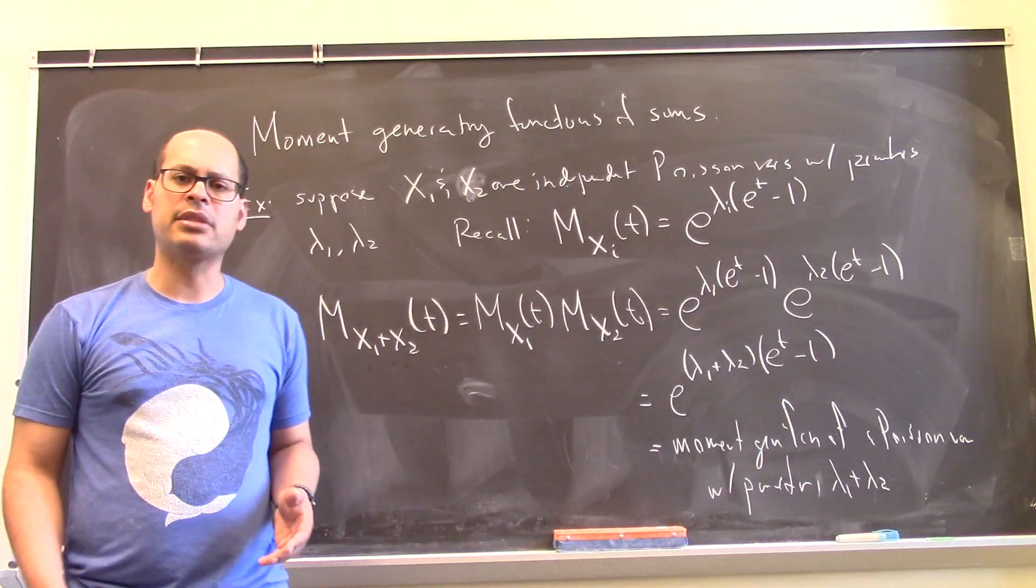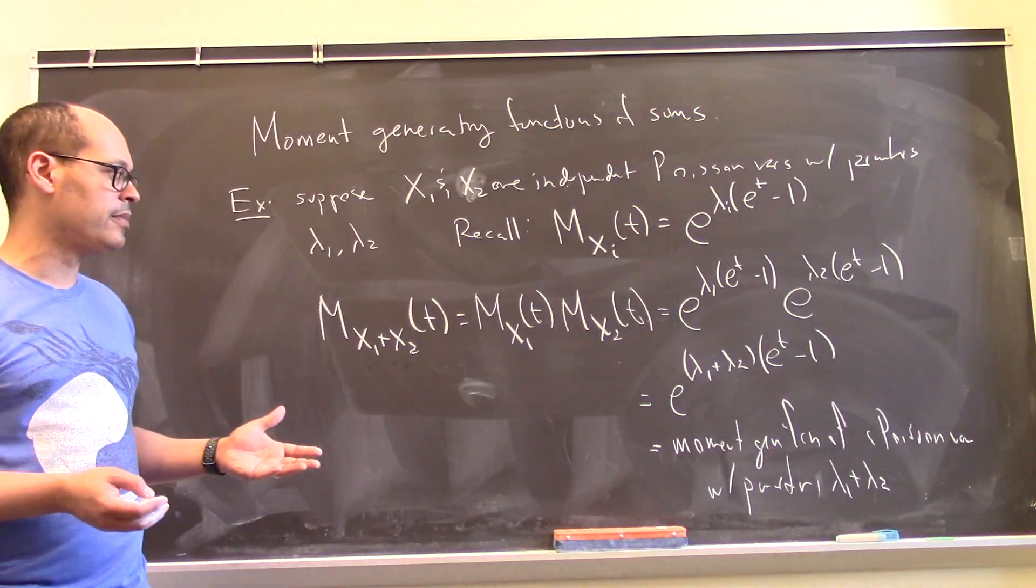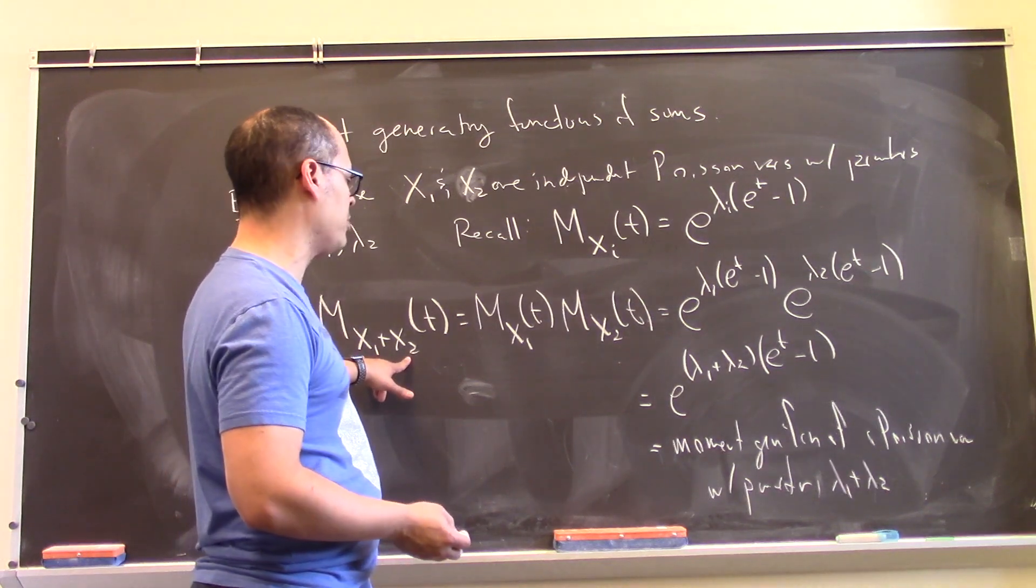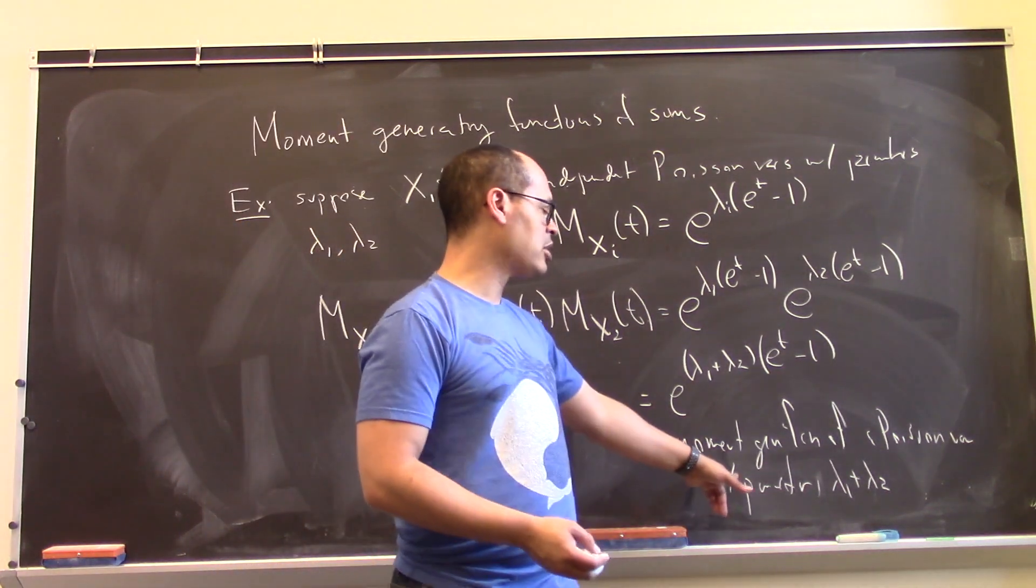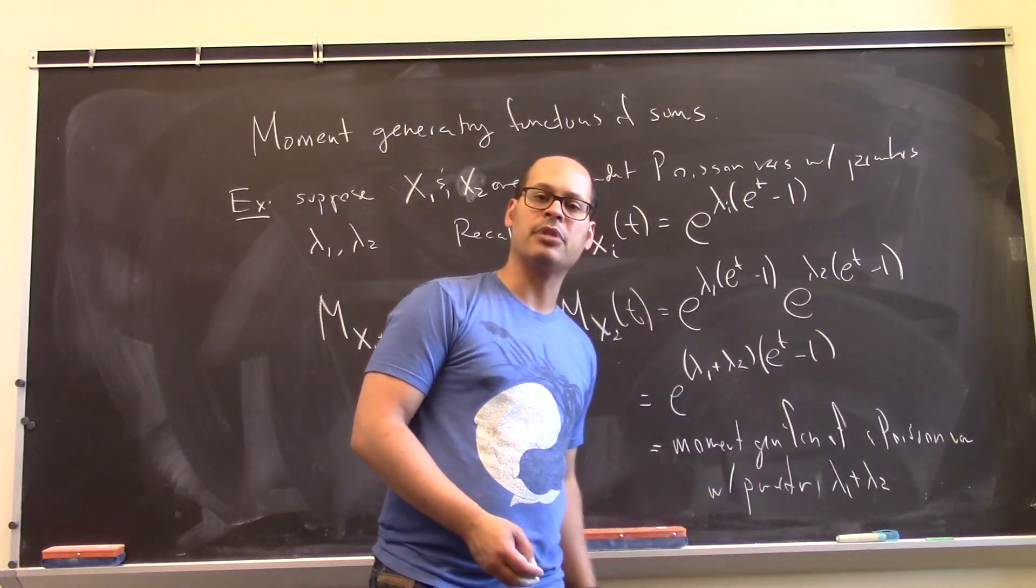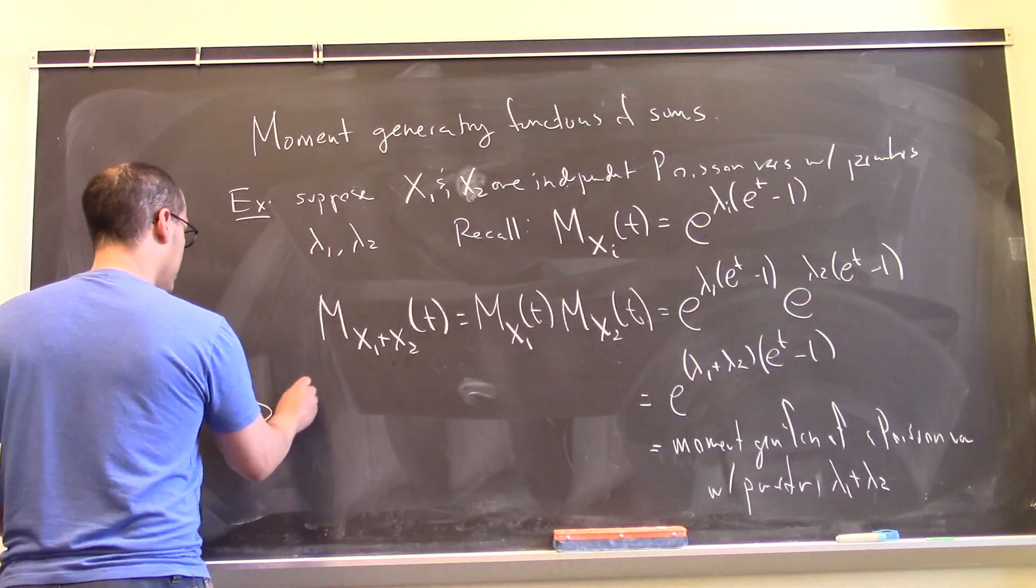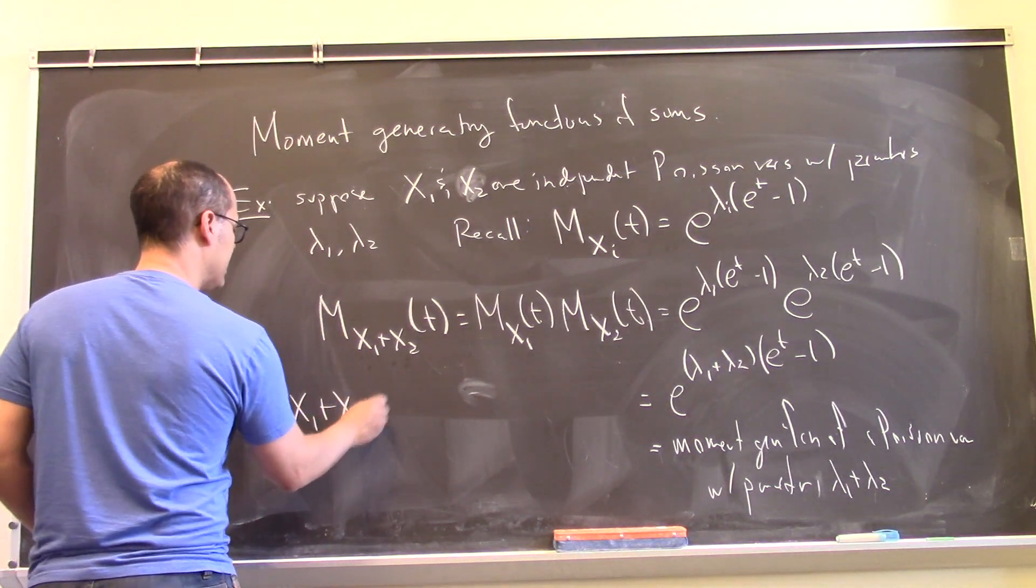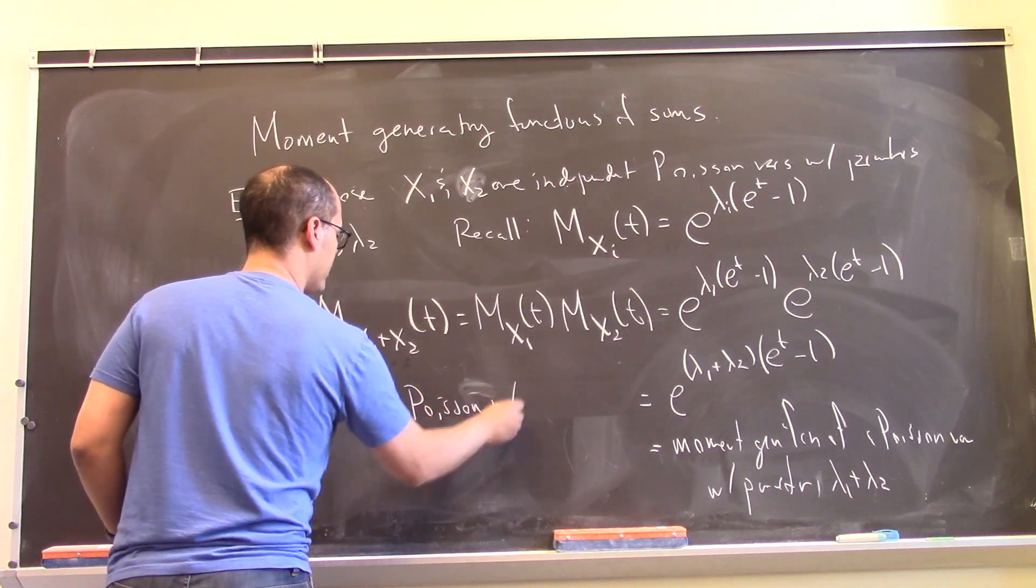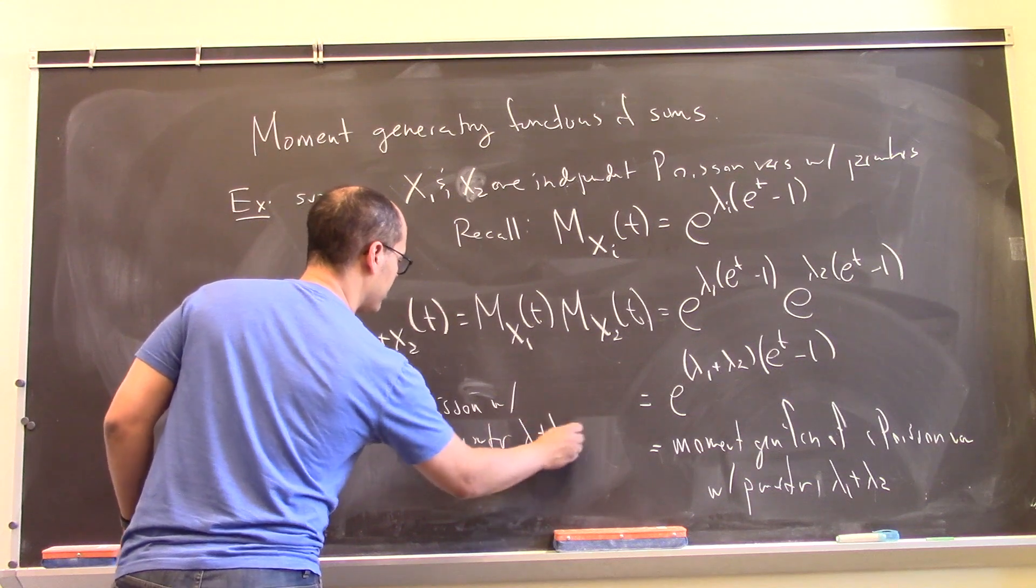But what we know is that the moment generating function completely determines the original random variable. So, because the moment generating function of x1 plus x2 is the same as the moment generating function for a Poisson variable with parameter lambda 1 plus lambda 2, that tells us that x1 plus x2 is Poisson with parameter lambda 1 plus lambda 2.